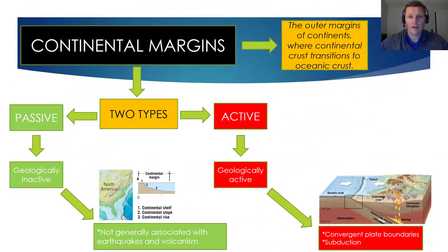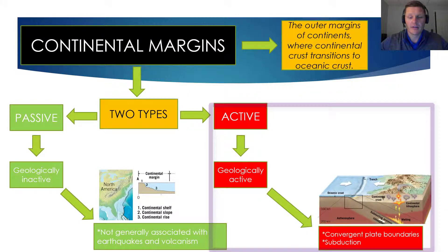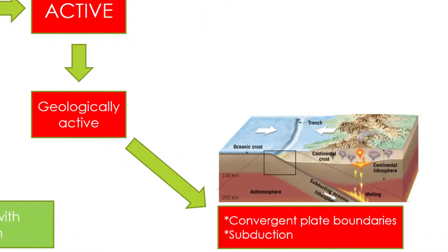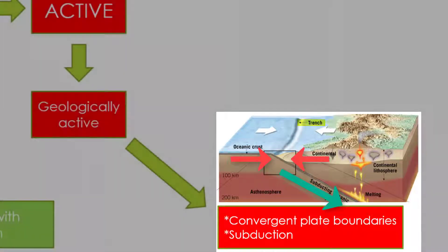The second type is the active continental margin. When we say active, we mean geologically active. Specifically, these continental margins are associated with convergent plate boundaries and subduction. In regions where you find active continental margins, you often find earthquakes and volcanic activity. Another telltale sign of active continental margins is the existence of oceanic trenches in these regions.